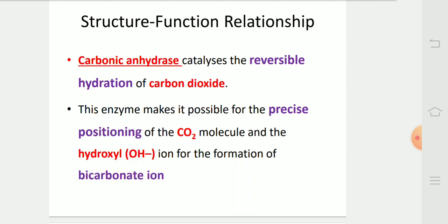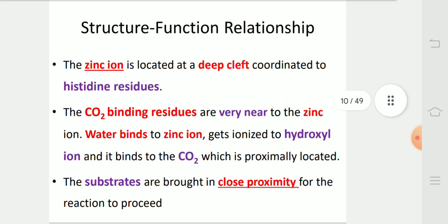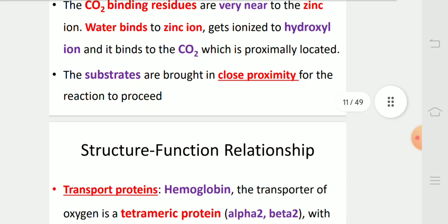Carbonic anhydrase characterizes the reversible reaction, hydration of carbon dioxide. This enzyme makes it possible for the precise positioning of the carbon dioxide molecules and hydroxyl ion for the formation of bicarbonate. In this diagram, we can see the reaction brought about by carbonic anhydrase in which HCO3- and H+ are formed. The zinc ion is located at a deep cleft coordinated to histidine residues. The CO2 binding residues are very near to the zinc ion. Water binds to zinc ion, gets ionized to hydroxyl ion and binds to the CO2 which is proximally located. The substrates are brought in close proximity for the reaction to proceed.